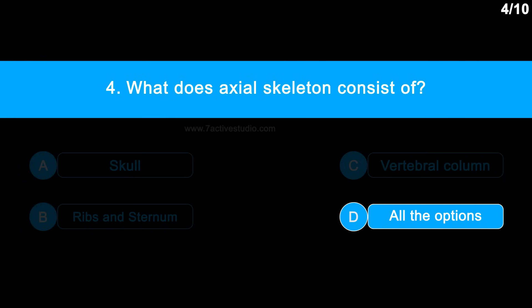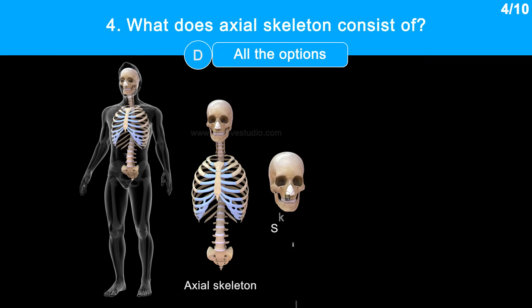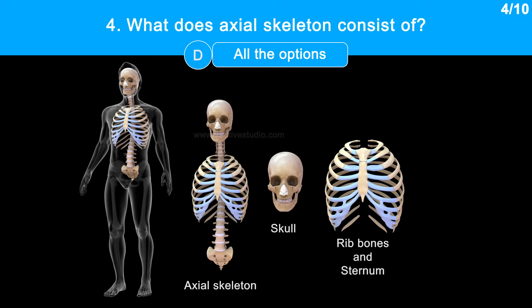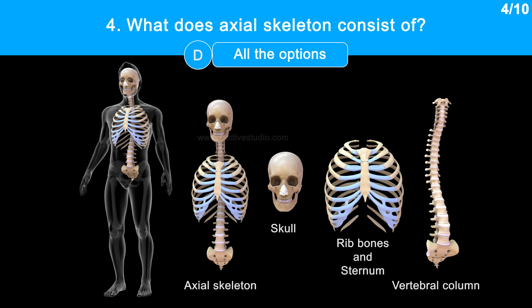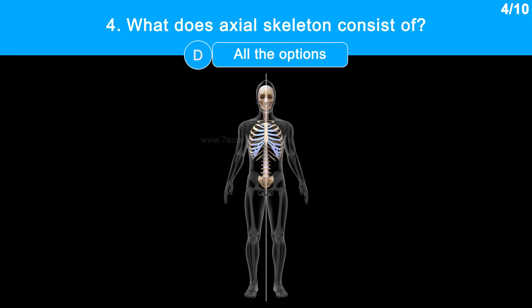The correct answer is option D, all the options. The axial skeleton includes the skull, which is the bone structure of the head; rib bones and sternum, which form a cage of ribs around our chest; and the vertebral column, also known as the backbone or spine. These are situated symmetrically along the central axis of the body.